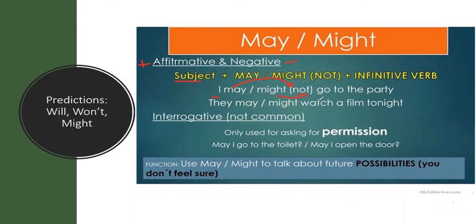We have: 'They may watch a film tonight,' 'They may not watch a film tonight,' 'They might watch a film tonight,' or 'They might not watch a film tonight.' It depends — for example, they may watch a film tonight if it's raining and they are not going out, or they might not watch a film tonight if they go to a restaurant. It is a possibility — something that depends on another event.